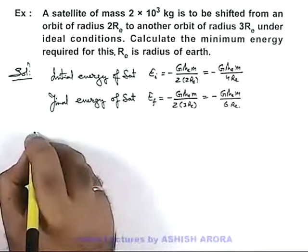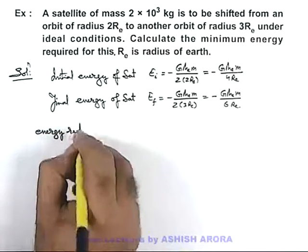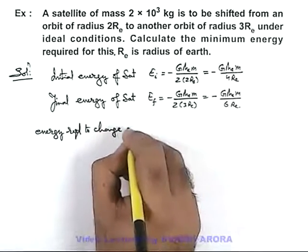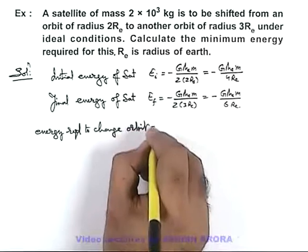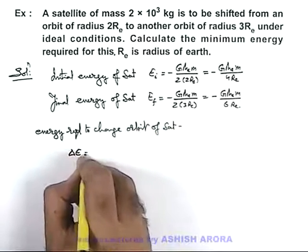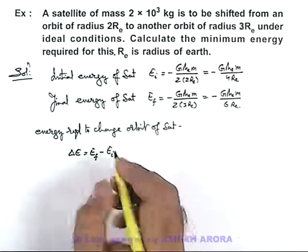And we can find out the energy required to change orbit of satellite. This can be written as ΔE, which is Ef minus Ei, the amount of excess energy which is required.